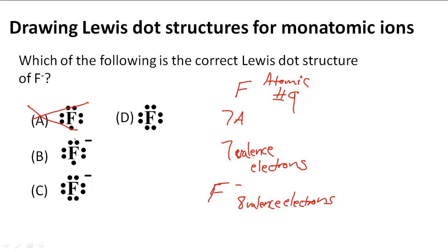B, it has 1, 2, 3, 4, 5, 6, 7 and a negative. So we're doing a little better with the negative showing that we have gained a valence electron. However, there's only 7 valence electrons and we know that we're supposed to have 8 if we gained one. So B is wrong.